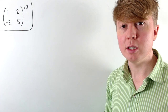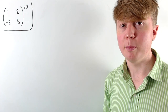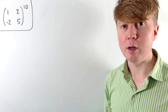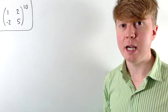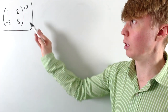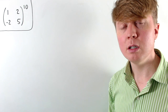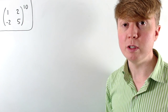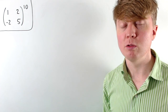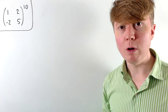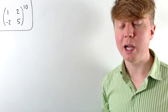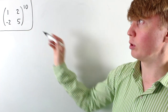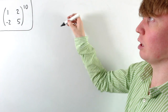We're going to look at a neat way of raising a matrix to a power, which works as quite a nice shortcut, even if our matrix isn't diagonalizable, like this matrix here isn't. The standard shortcut approach would be to try and diagonalize our matrix, which makes raising it to a large power much easier. But unfortunately for this example, it's not diagonalizable.